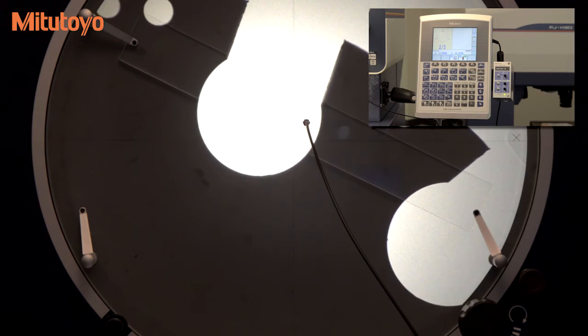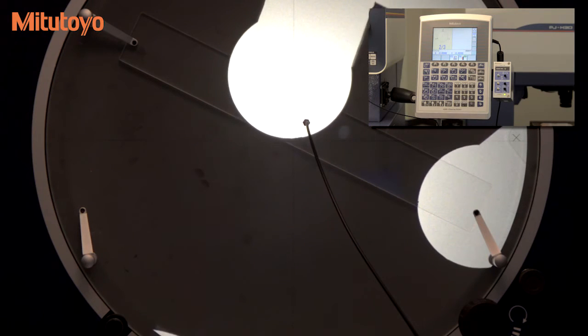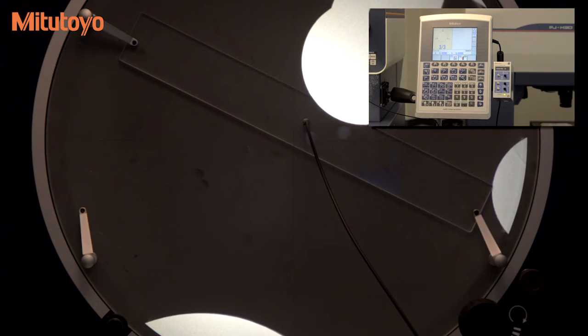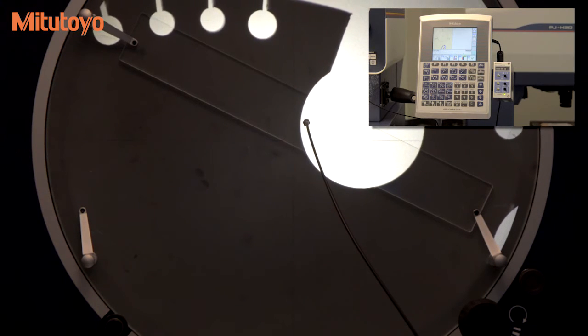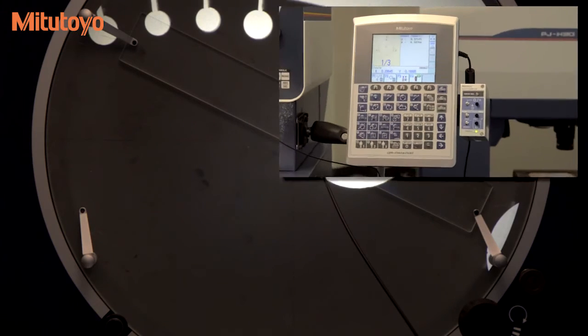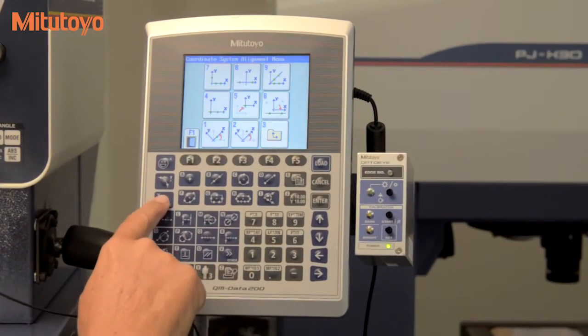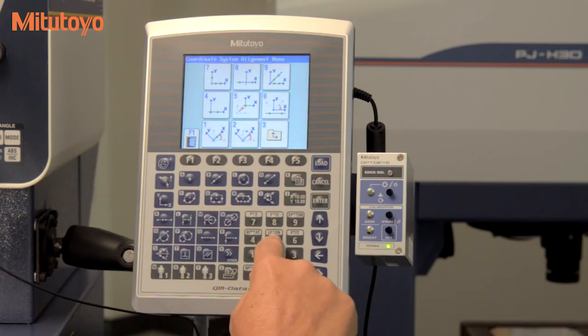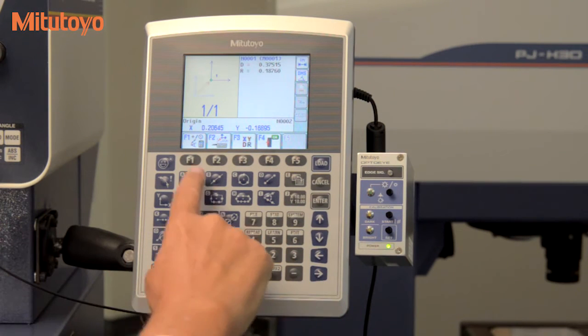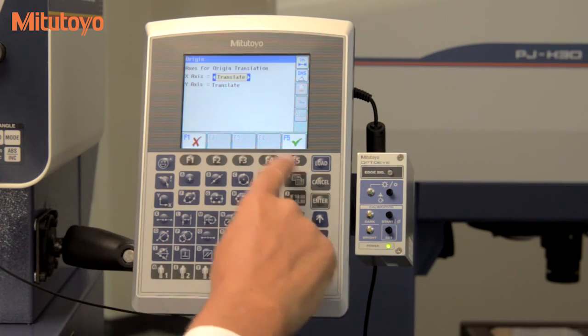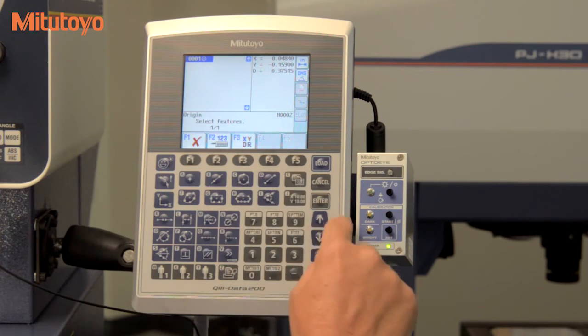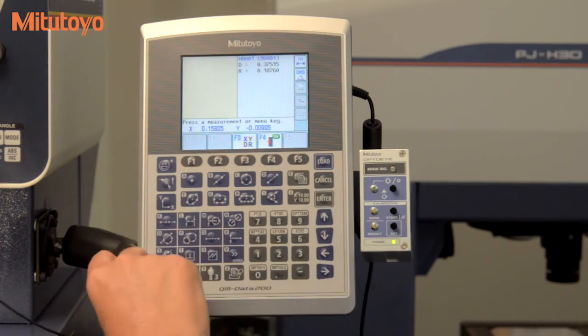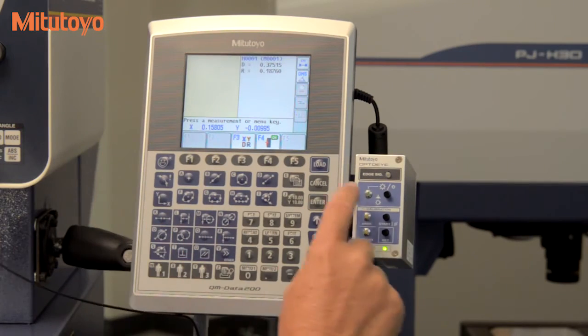Here we find the center of a circle to use as our new origin. Select the method to use to move the origin, just simple X and Y position in this example. Press the under key to translate, and the coordinate system is aligned without refixturing the part.